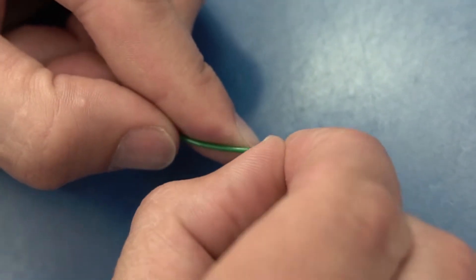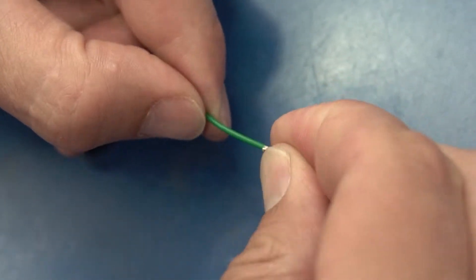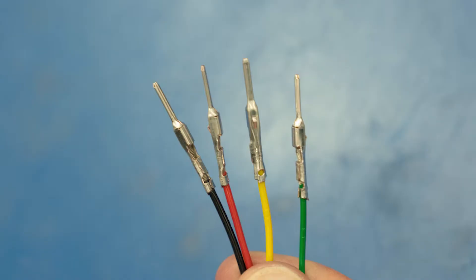Since the green wire is smaller in diameter we're going to fold it over itself to increase the connection when crimping. Here's the four wires once completed.